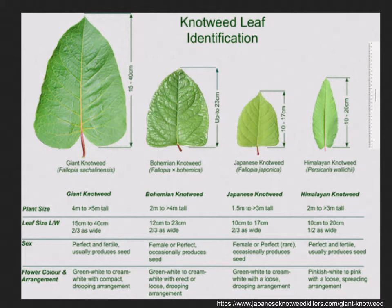This is a side-by-side comparison of all knotweeds going from giant to bohemian to Japanese to Himalayan. This key also points out reproduction capabilities — both bohemian and Japanese rarely produce seeds, while giant normally does produce seeds, giving giant a reproductive edge in spreading.